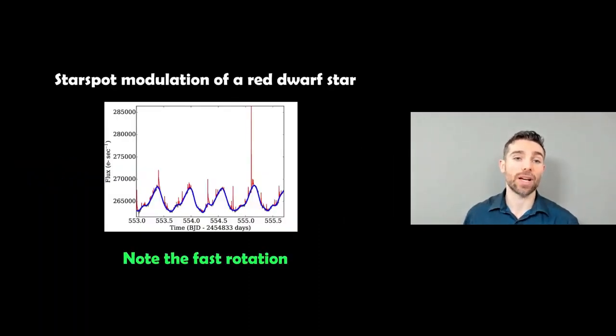Here's an actual example of one. This is some star spot modulation on a red dwarf star, a fairly low mass cool star, and the blue line is the actual star spots. You can see you've got a bit of a regular pattern which is going to relate to your rotation period of the star. It's not exactly the same each time.